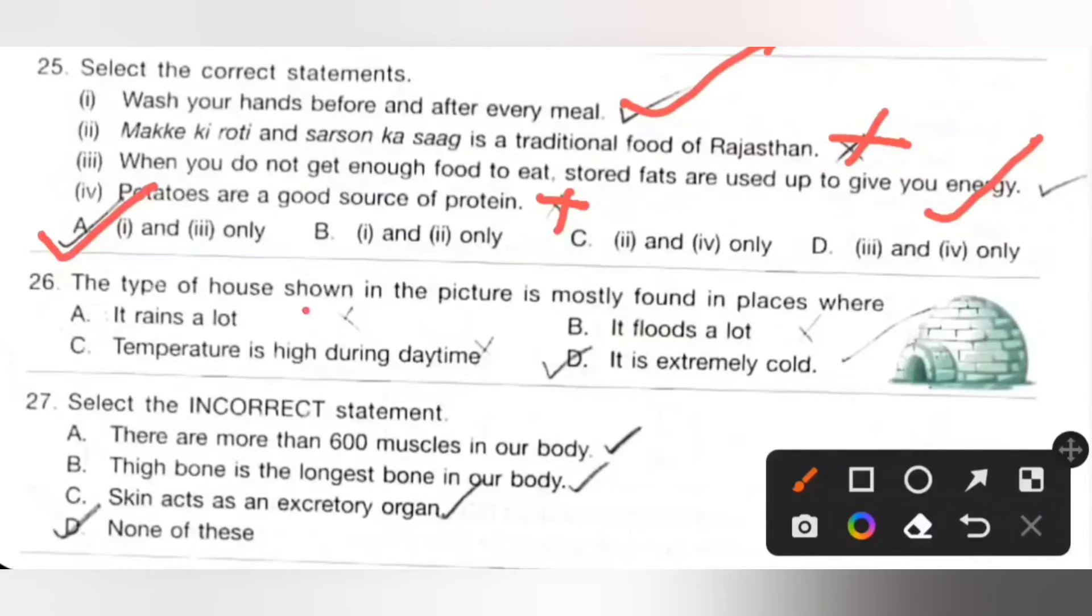Twenty-six: The type of house shown in the picture is mostly found in places where A: It rains a lot, no. B: It floods a lot, no. C: Temperature is high during daytime, no. D: It is extremely cold. So option D is the correct answer.